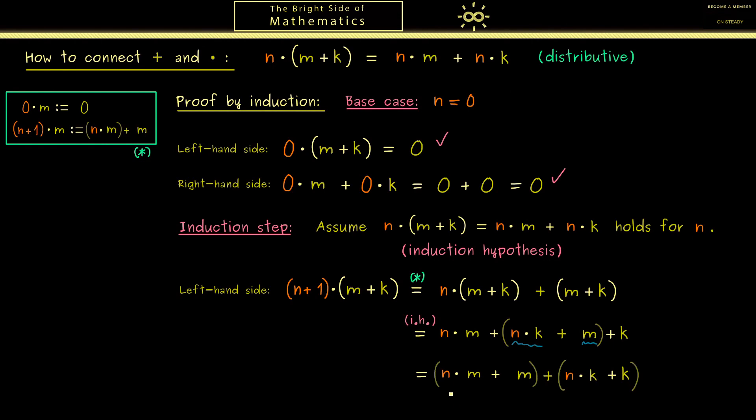And now you should recognize for the last time the recursive definition we can use. Here for the first part we have (n+1) times m and for the second part we have (n+1) times k. And now you should see this is exactly the right hand side of the distributive law for n plus 1. In other words the induction step is correct, and with this the distributive law is proven.